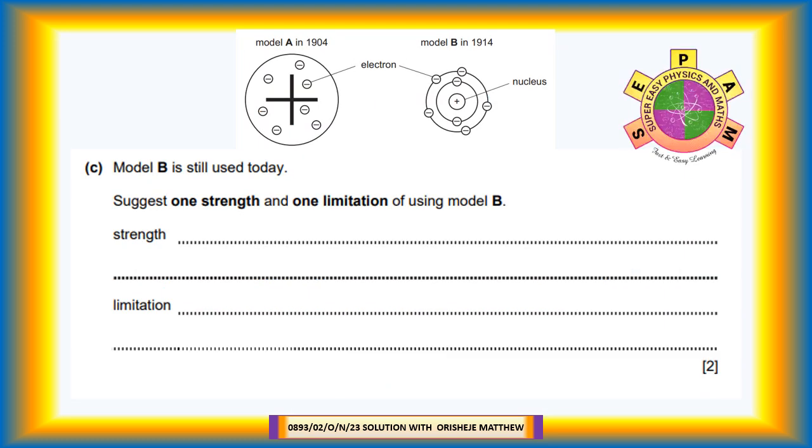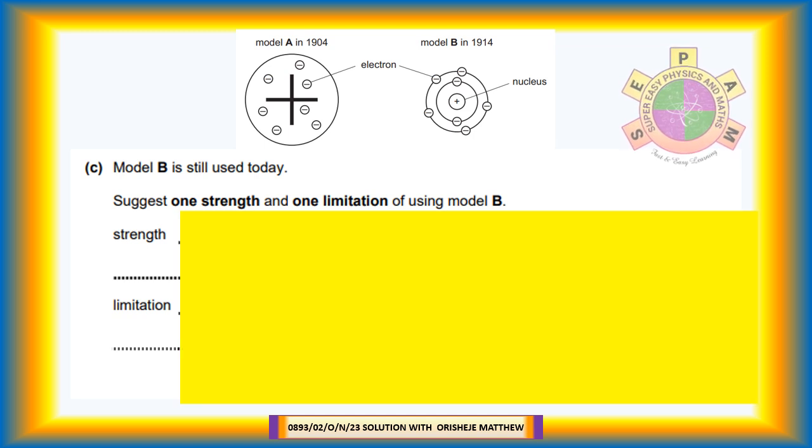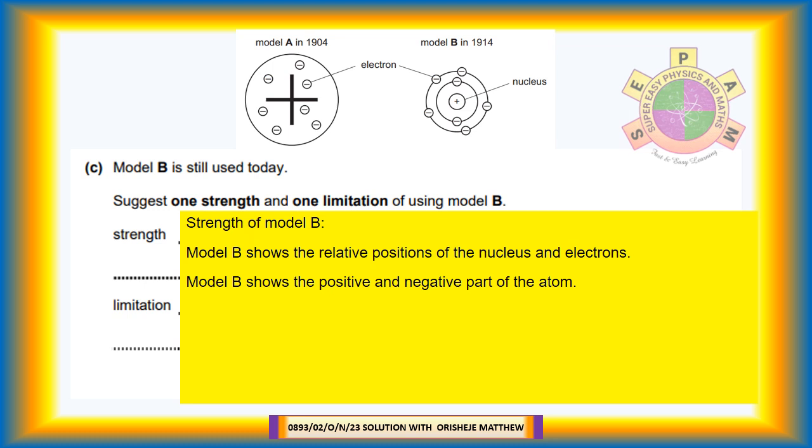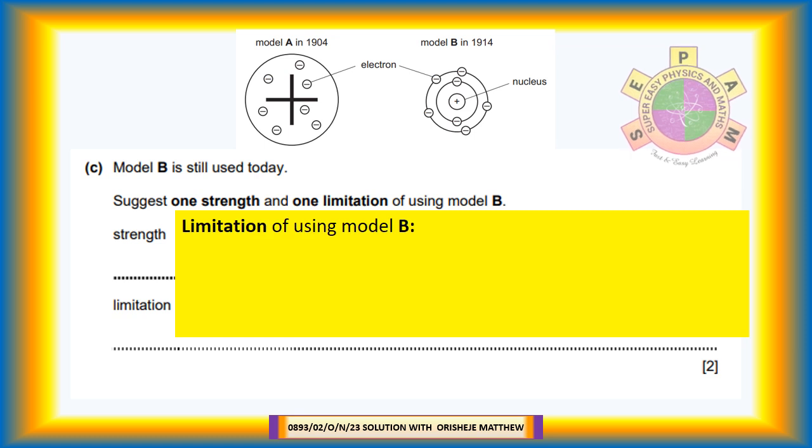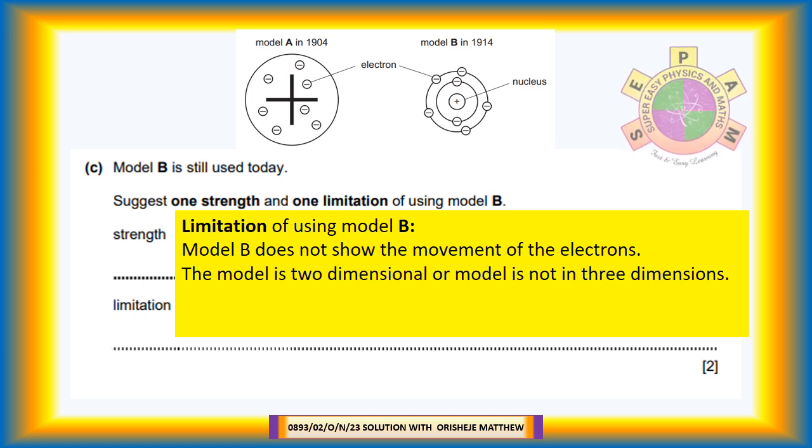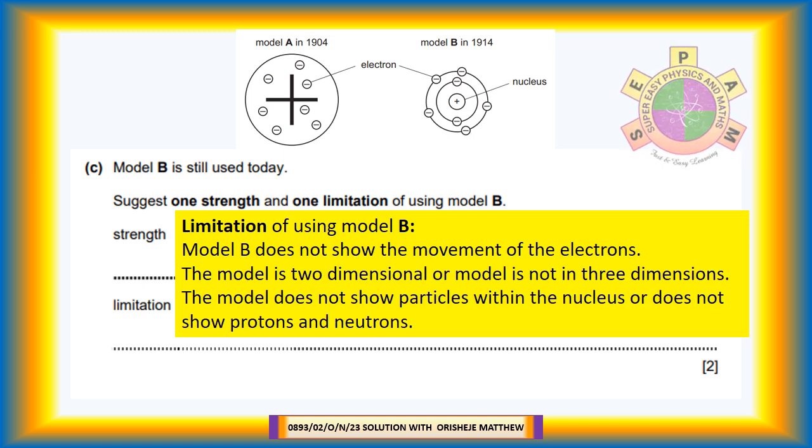Question 12c: Model B is still used today. Suggest one strength and one limitation of using Model B. Strength of Model B: Model B shows the relative positions of the nucleus and electrons. Model B shows the positive and negative part of the atom. Model B shows particles that are too small to be seen. Model B shows the space in an atom. Model B shows electrons in shells, shows electronic structure and number of electrons. Limitation of using Model B: Model B does not show the movement of the electrons. The model is two-dimensional or model is not in three dimensions. The model does not show particles within the nucleus or does not show protons and neutrons.